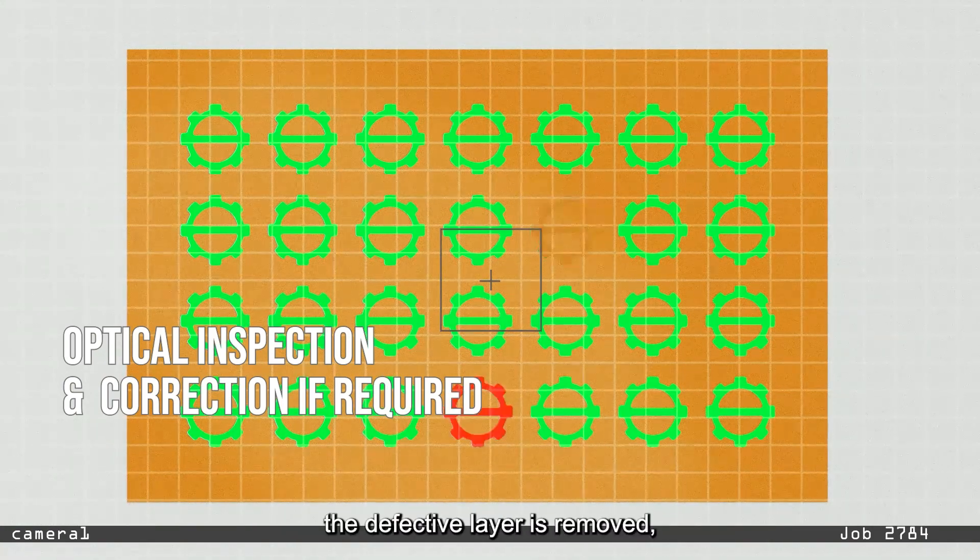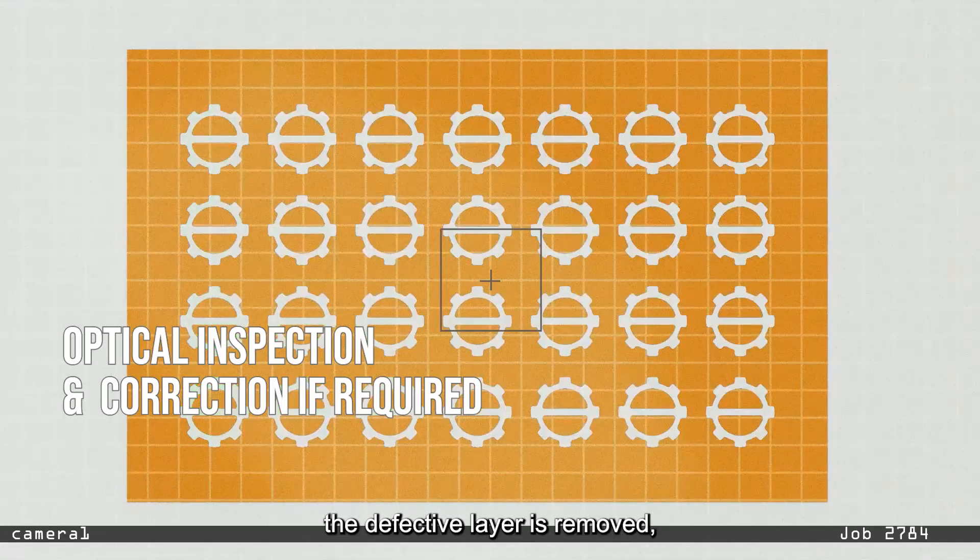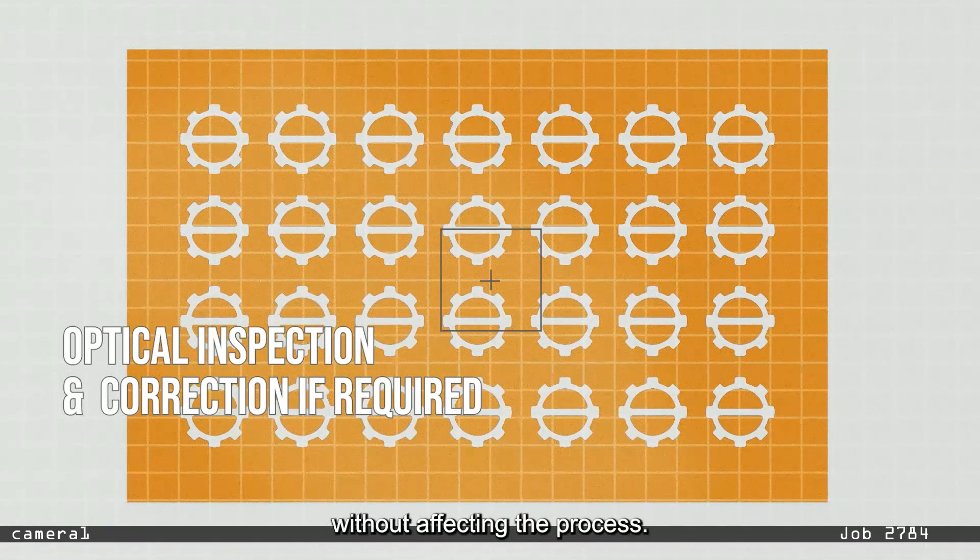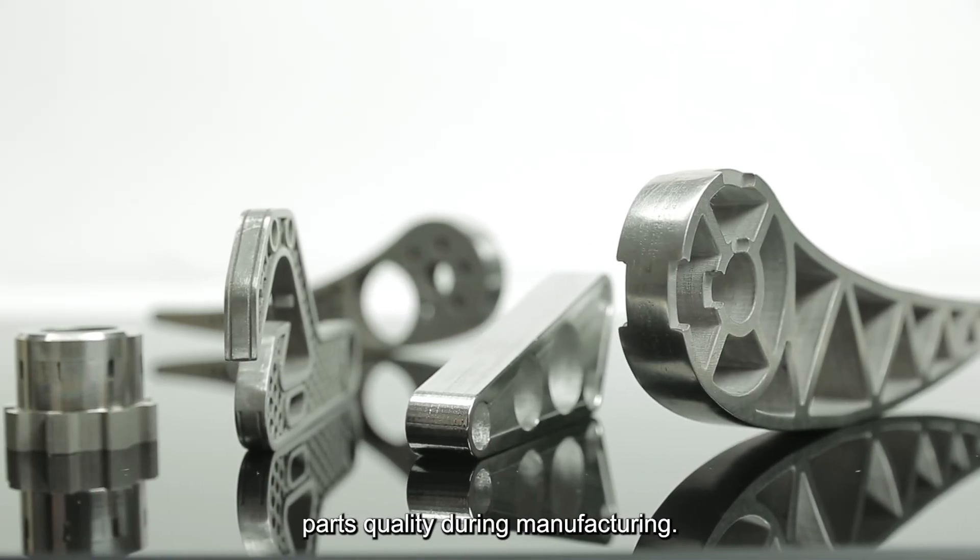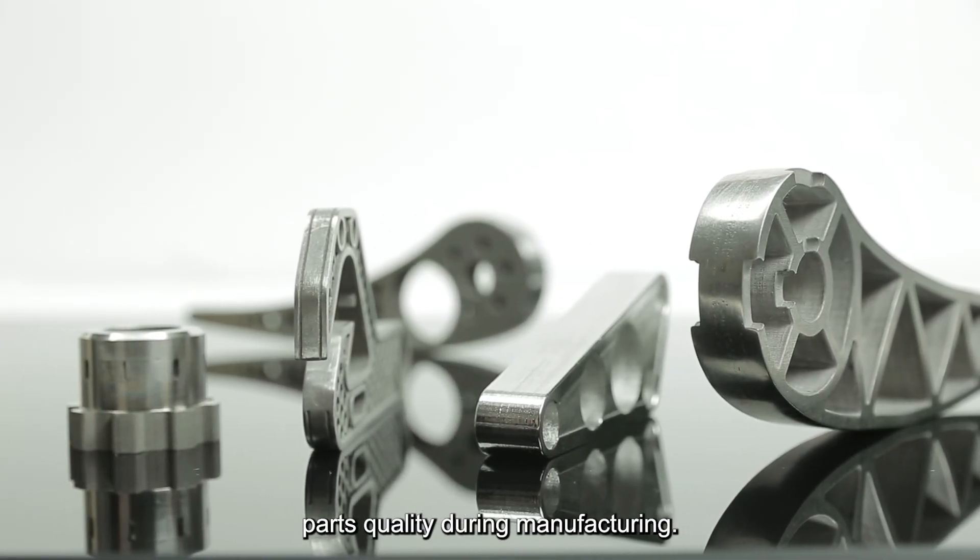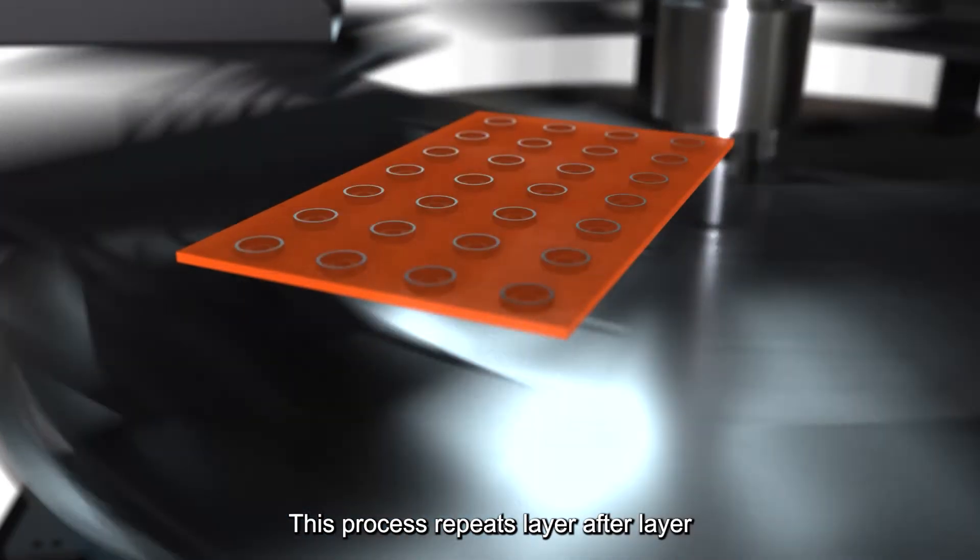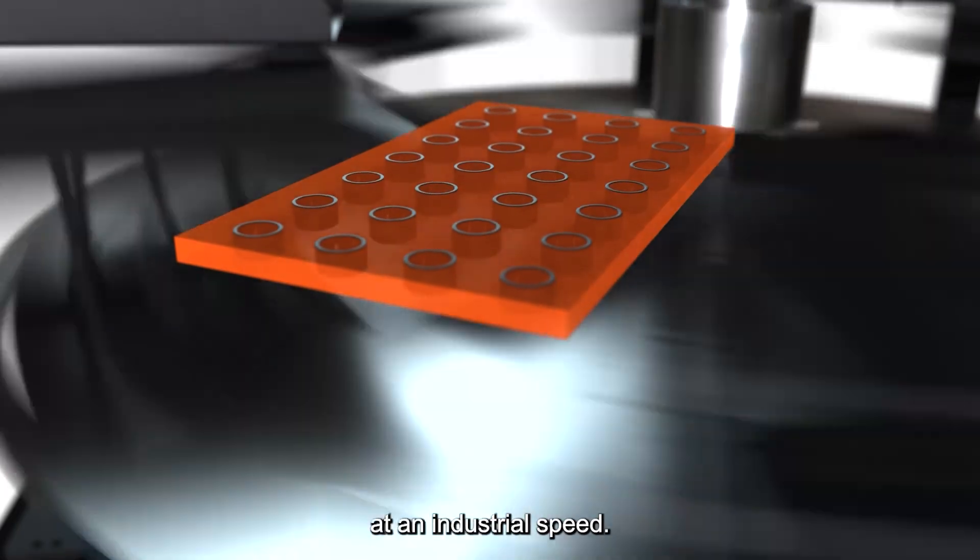If it does not, the defective layer is removed and the item repeats the previous layer without affecting the process. This ensures real-time control of parts quality during manufacturing. This process repeats layer after layer at an industrial speed.